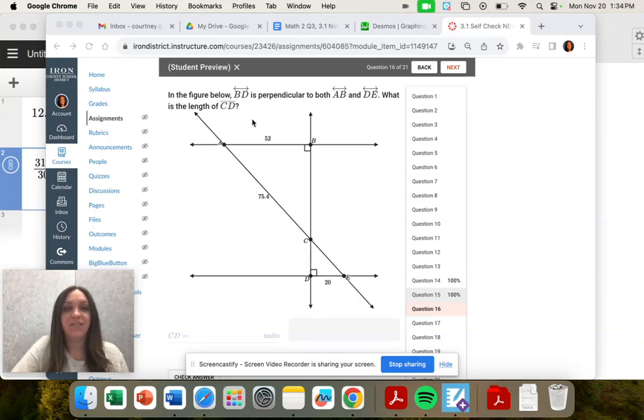Question 16 in the figure below. BD is perpendicular. So BD, this line right here, is perpendicular to DE, this line, and C and AB. So perpendicular means it makes a right angle. So we have two right angles, and it means that these lines are parallel. What is the length of CD?